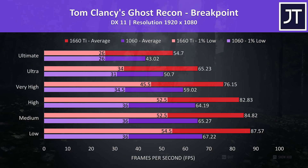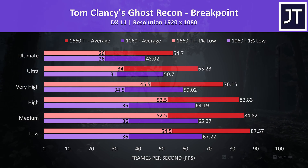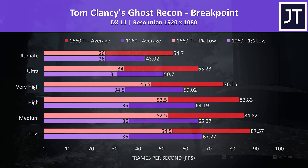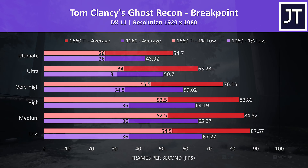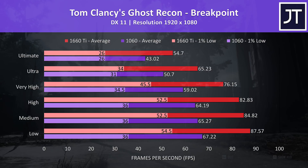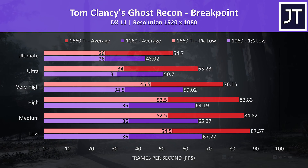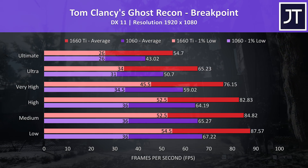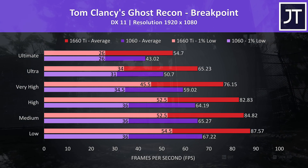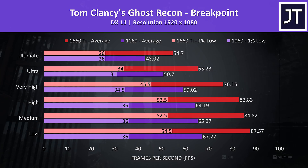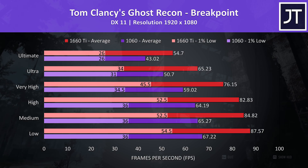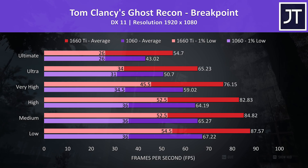Ghost Recon Breakpoint was tested using the game's benchmark tool. There was a large difference to 1% low at lower setting levels, but maxed out there was no difference there. In average FPS the 1660 Ti was just 27% faster than the 1060 — decent, but compared to the other games tested, it's on the lower side.